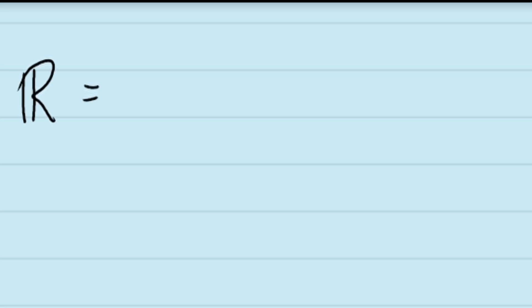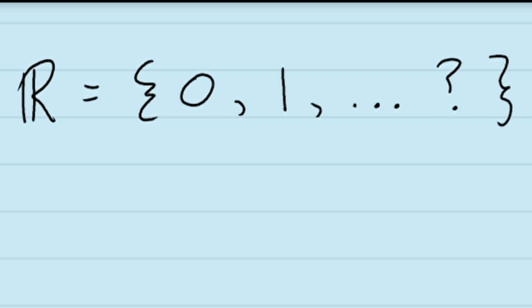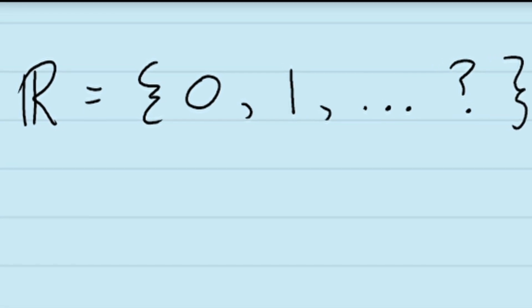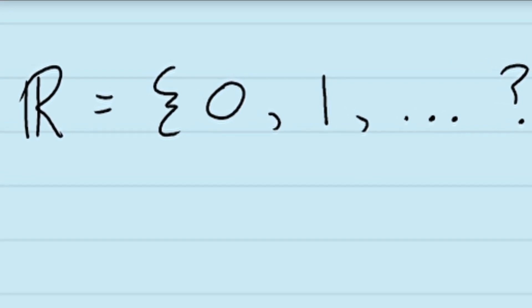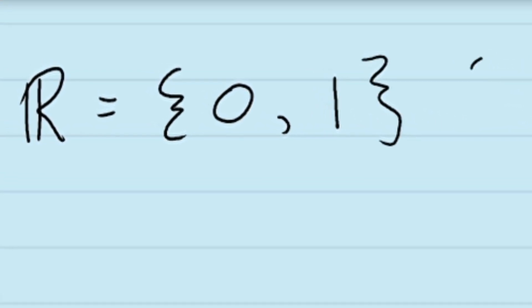One issue that we need to deal with is that at this point, we only know about the existence of two real numbers, the numbers 0 and 1. This is because these are the only real numbers that are explicitly defined in the definition. And so we need to ask ourselves, is it possible that the real numbers consist only of 0 and 1?